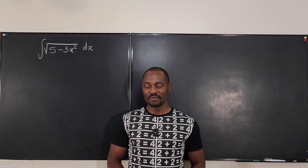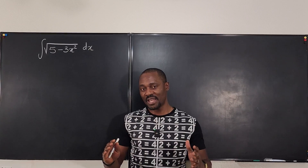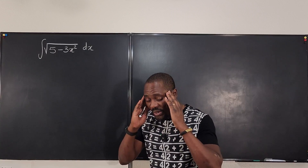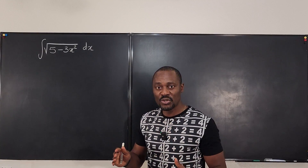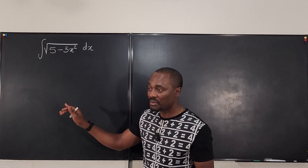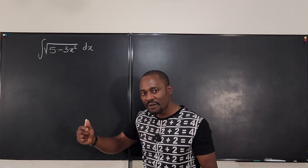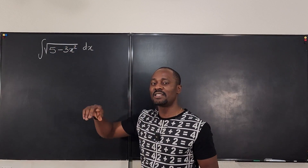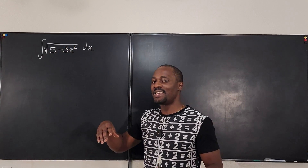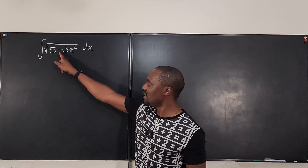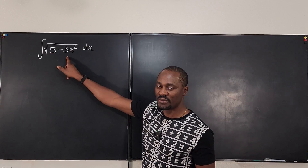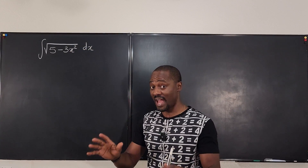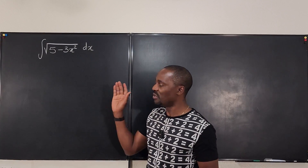Hello, welcome to another video. Let's quickly solve this integration problem: the square root of 5 minus 3x squared dx. The first thought you're going to have is what strategy should I adopt? I don't see any modification, but because there's a square root sign and a minus sign with a constant minus a function, you might be thinking of sine theta substitution. And I assure you that that is what you should do. But before we do that, you have to prepare the way.